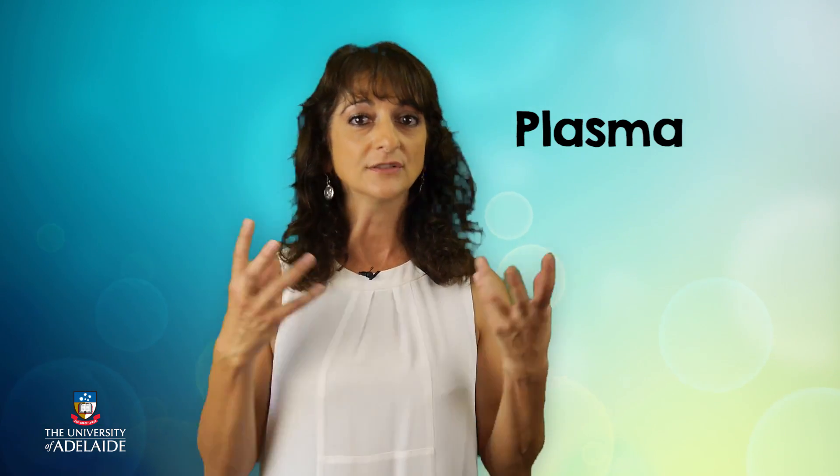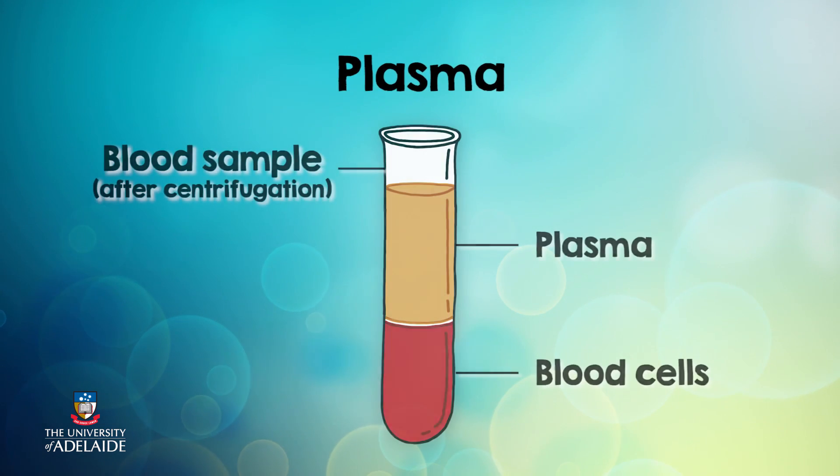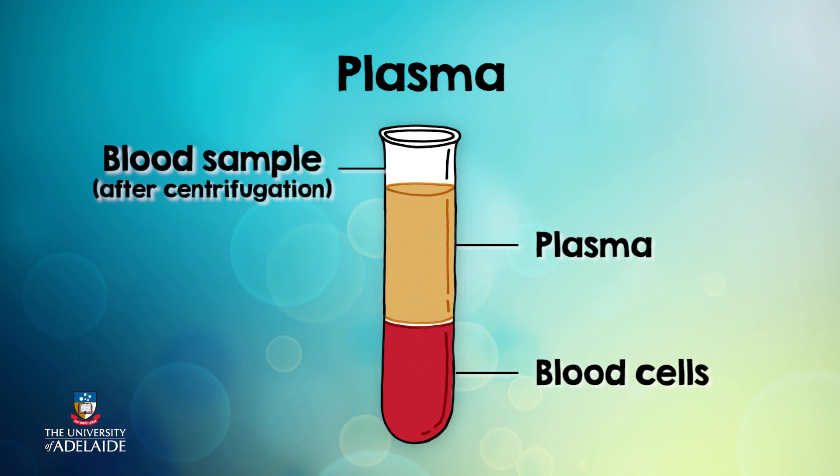Plasma is a clear watery fluid containing many different molecules and proteins. It carries nutrients and also transports carbon dioxide. You can see plasma rising to the top of a centrifuged blood sample, where it appears as a clear yellowish fluid. The waste products that cells produce, which build up in the tissue fluids, are absorbed by the plasma, which plays a very important role in removing the body's wastes.